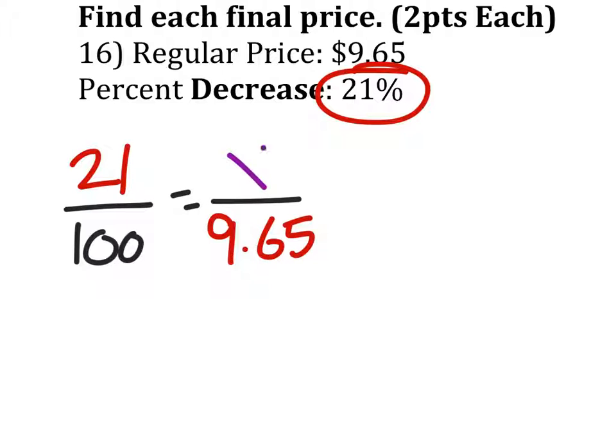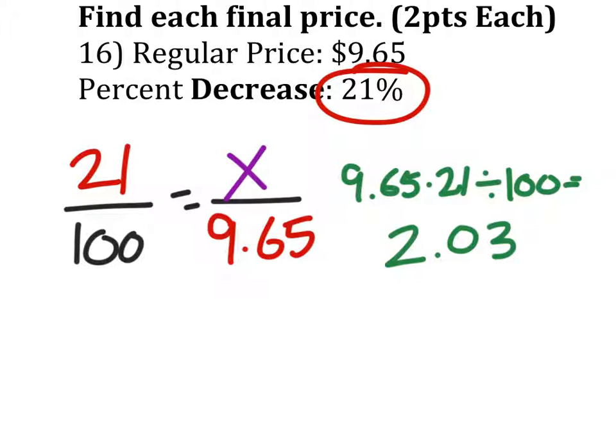And we want to find the new 21% off. So to solve this one we use the fishy method, or you can use bowtie if you want, whatever. So that would be 9.65 times 21 divided by 100. And that would give me... I rounded this to $2.03 because we're talking about money, so rounding to cents.